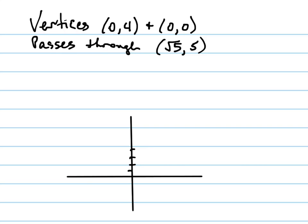Let's find the equation of the hyperbola that has vertices (0,4) and (0,0) and passes through the point (√5, 5).